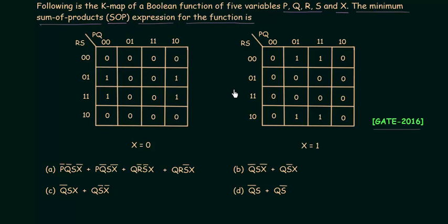I hope you know how to deal with a 5-variable kmap. If not, I will explain how to handle this type of map. A 5-variable kmap is a 3D map. I will draw the 3D view of the map given in the problem. The first map is when X equals 0, and the second map is when X equals 1.